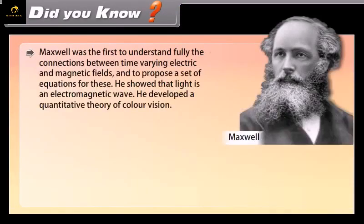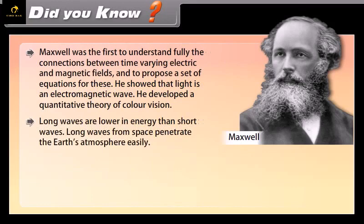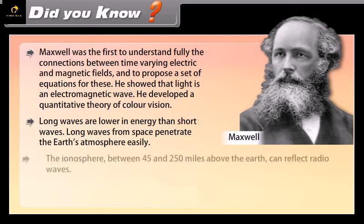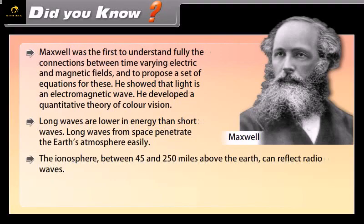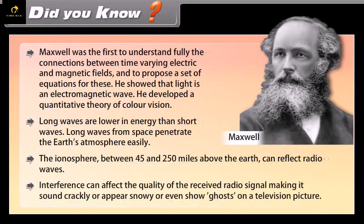Did you know? Maxwell was the first to understand fully the connections between time-varying electric and magnetic fields and to propose a set of equations for these. He showed that light is an electromagnetic wave. He developed a quantitative theory of color vision. Long waves are lower in energy than short waves. Long waves from space penetrate the Earth's atmosphere easily. The ionosphere between 45 and 250 miles above the Earth can reflect radio waves. Interference can affect the quality of the received radio signal making it sound crackly or appear snowy or even show ghosts on a television picture.